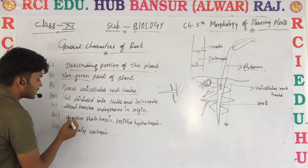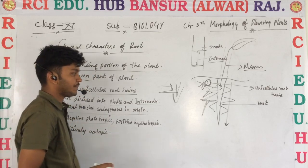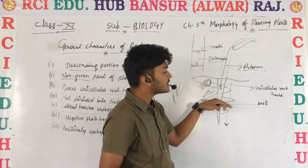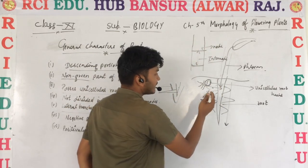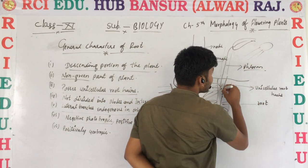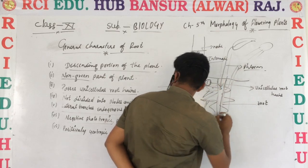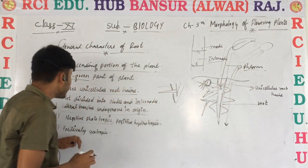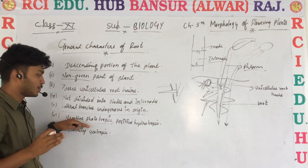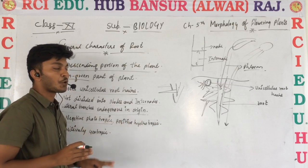Roots are negative phototropic, meaning they grow in the direction opposite to light. Like away from the sun, the roots grow in the opposite direction. That is why they are negative phototropic. Roots are also positive hydrotropic, meaning they grow toward water.